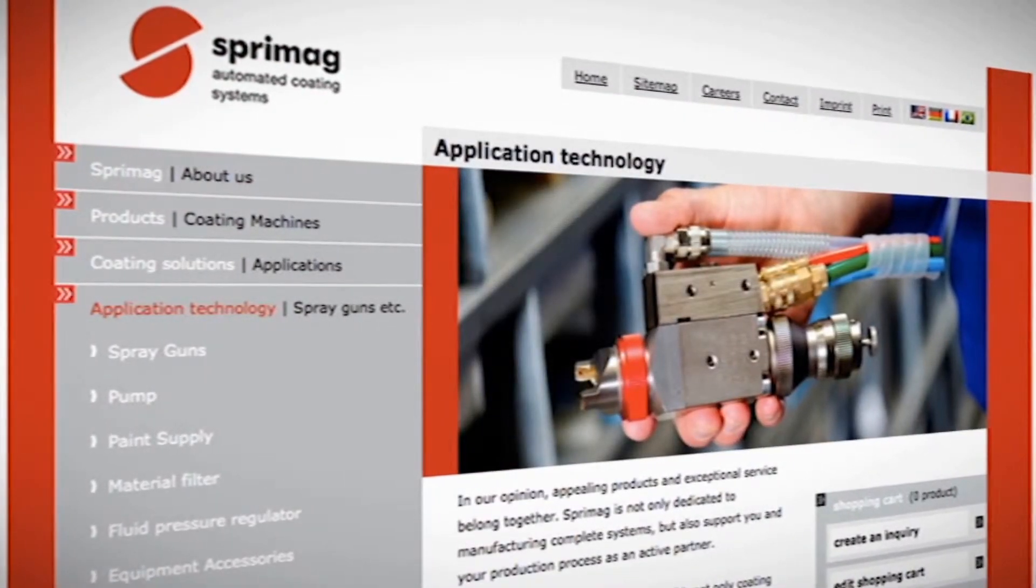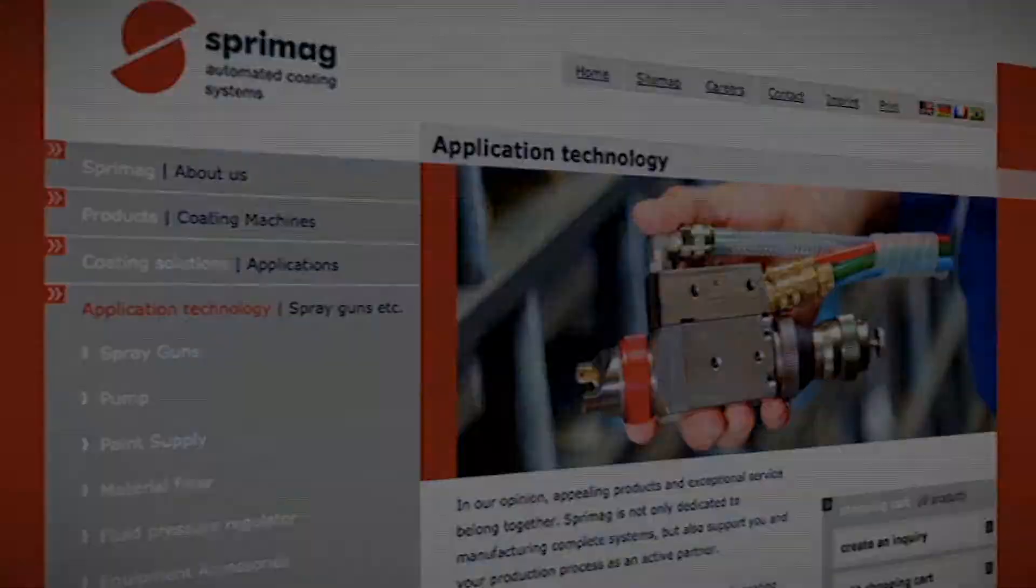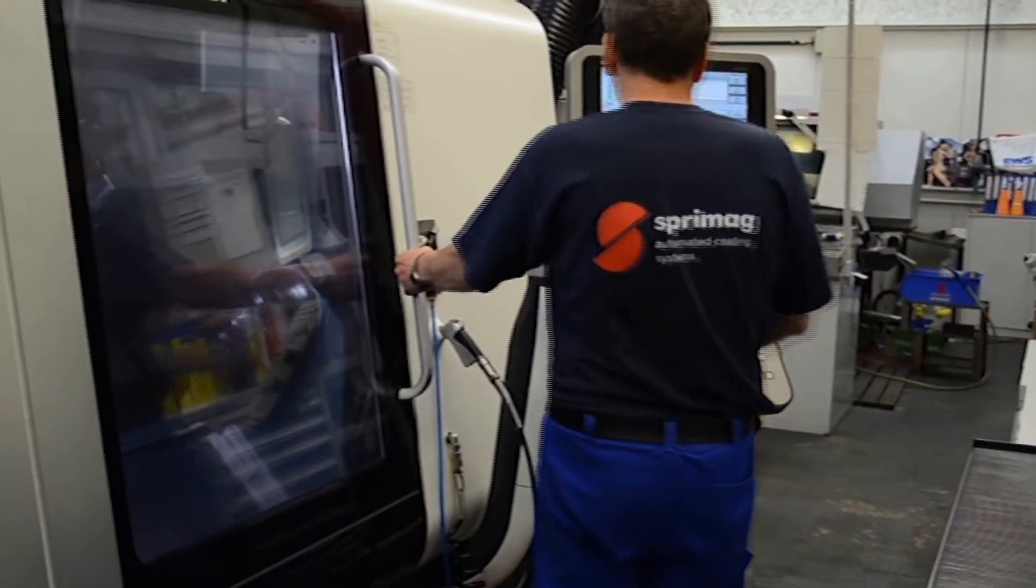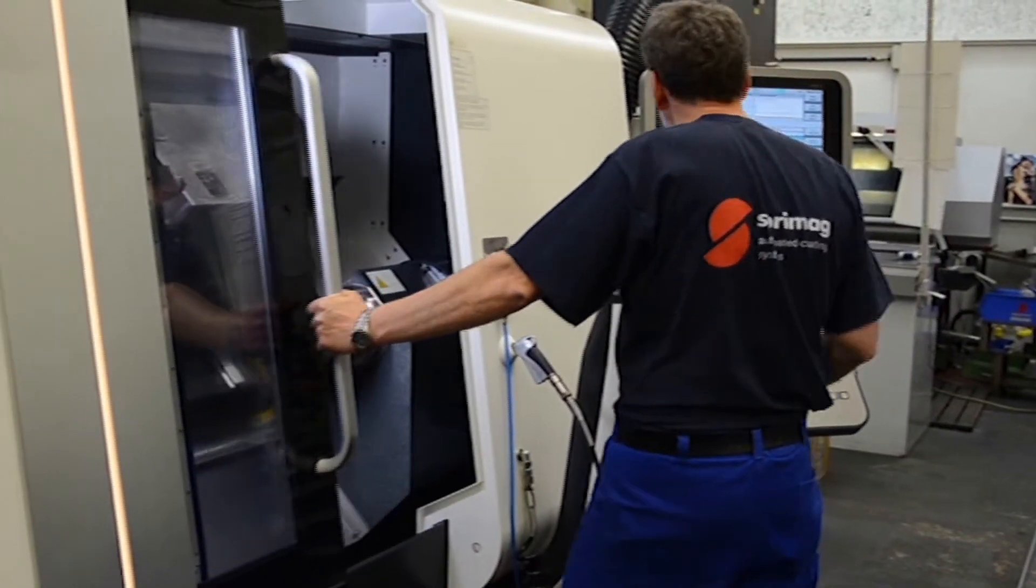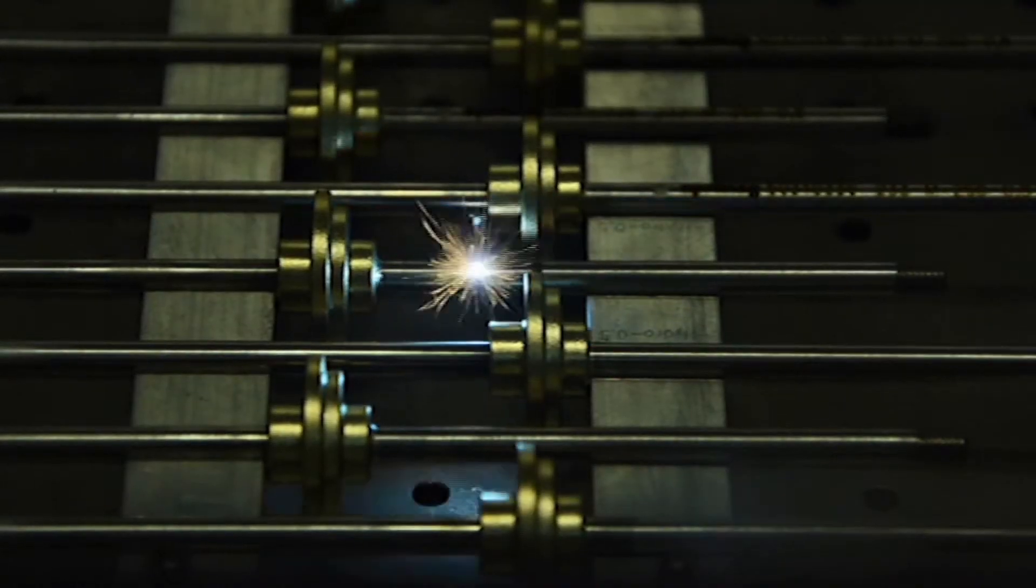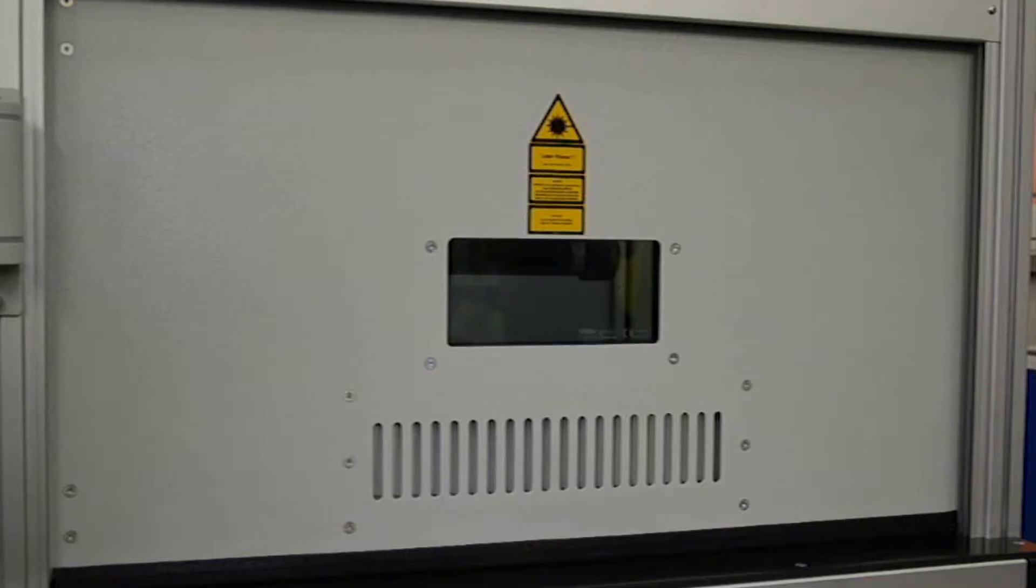Spare parts can be ordered conveniently online. One advantage is in-house production, which enables us to be flexible and quick in sending out spare parts. Every part is carefully produced and given a number. So you can still reorder the part years later.